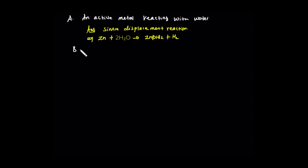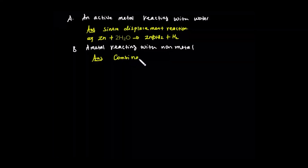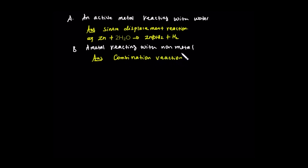B: Metal reacting with non-metal. Metal can react with non-metal — this is a combination reaction, where two pure substances react together to form a single compound. The reacting substances may be element-element, compound-compound, or element-compound.